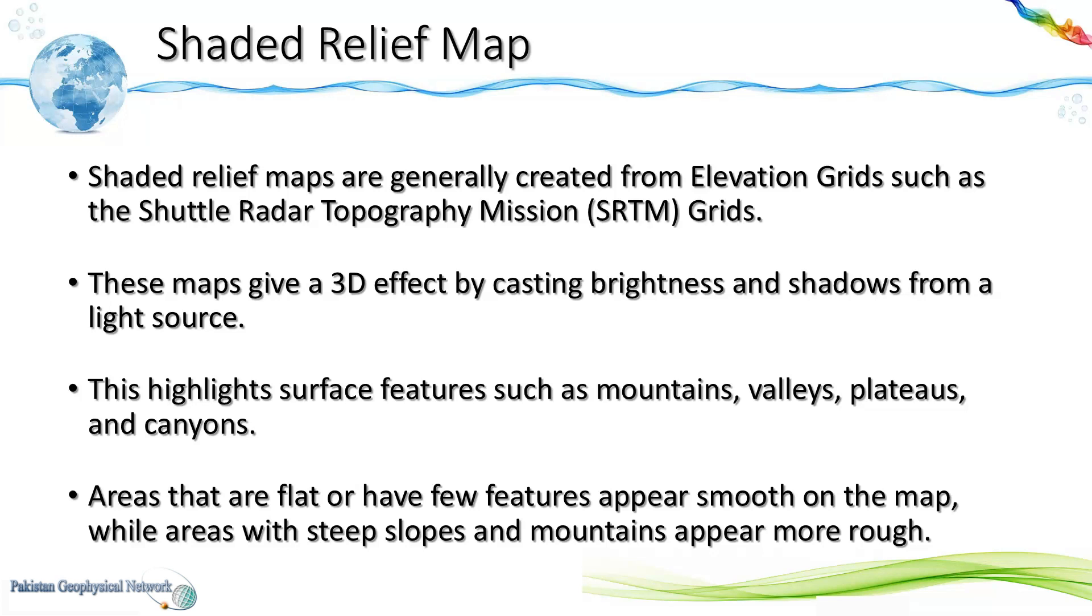These maps give a 3D effect by casting brightness and shadows from a light source. Thus mountains and valleys and all such undulations in the topography are highlighted whereas flat areas appear more smooth on these shaded relief maps.